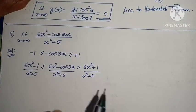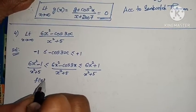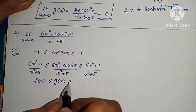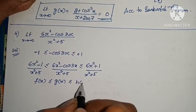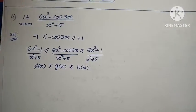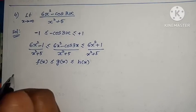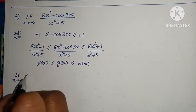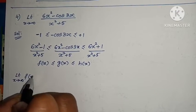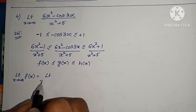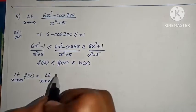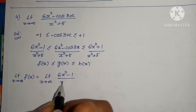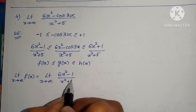This gives f(x) ≤ g(x) ≤ h(x). Now find limit x tends to infinity of f(x) = (6x² - 1)/(x² + 5). Take x² common: limit of (6 - 1/x²)/(1 + 5/x²).